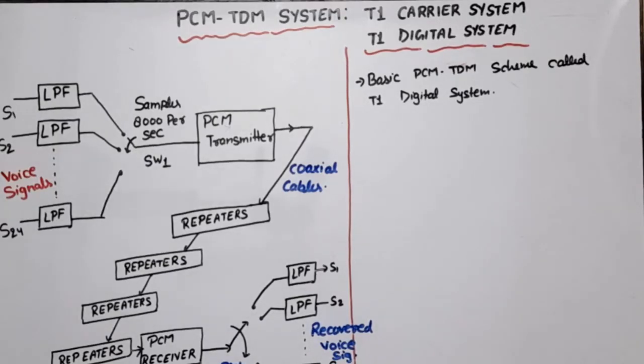Hello everyone, in this video lecture of communication engineering I am going to discuss a basic PCM-TDM system. PCM stands for pulse code modulation, TDM means time division multiplexing system, and this is also called T1 carrier system or T1 digital system. It's called a digital system because analog voice signals are converted using PCM into digital, and then those digital waveforms are transmitted through coaxial cable.